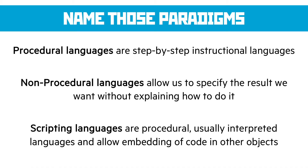Scripting languages are a little bit more difficult to explain. They are procedural and they're usually interpreted languages, but what they allow is for embedding of code in other objects. The best example is the use of JavaScript in HTML. JavaScript is the scripting language that runs on the web — an HTML page by itself isn't interactive, but JavaScript running inside it allows interactivity on top of an existing system.